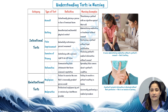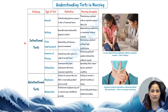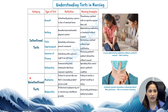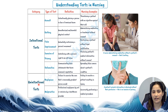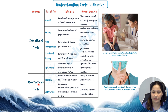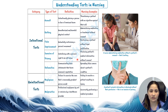Let's look at the types of torts you might encounter in nursing. We have intentional torts and unintentional torts such as negligence or malpractice. Here is a detailed table to illustrate these points — on one side we have intentional torts, and on the other hand we have unintentional torts. Let's walk through this table together.